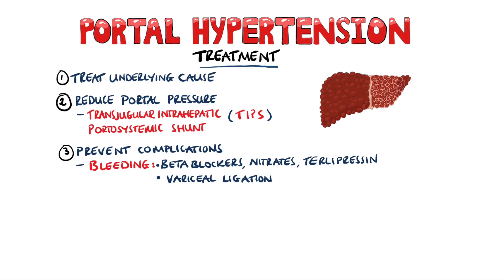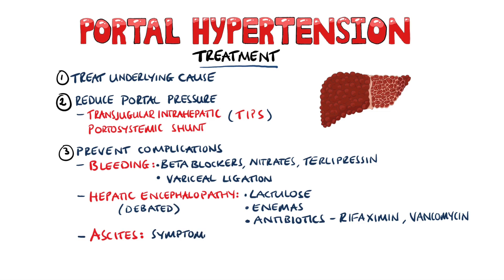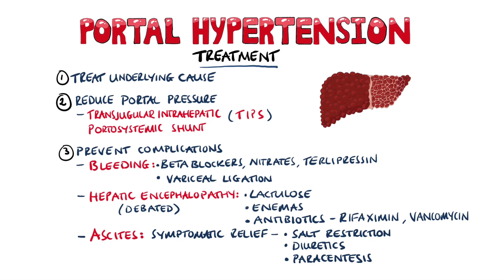Surgical treatments like variceal ligation are also used. Hepatic encephalopathy is reduced by giving lactulose, enemas, and antibiotics such as rifaximin and vancomycin in an attempt to reduce the urea produced by microbes, although this is still debated. Ascites will be treated both to prevent complications as well as for symptomatic relief, including salt restriction in the diet, the use of diuretics, and paracentesis.